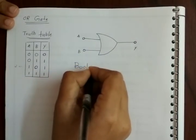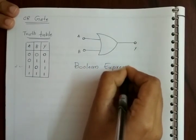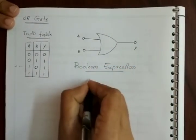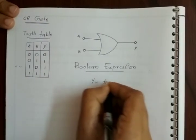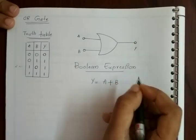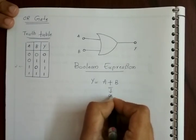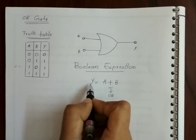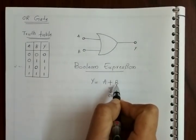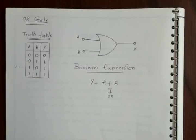The Boolean expression for the OR gate is given as: output Y is equal to A OR B. This means Y equals 1 if either A or B equals 1, or both of them equal 1. So this is the basic OR gate.